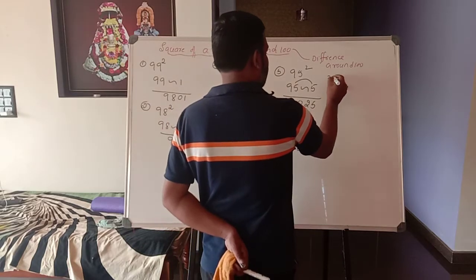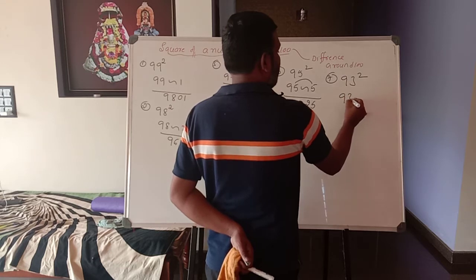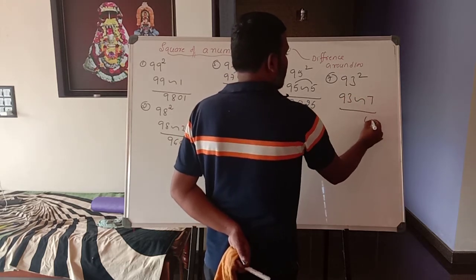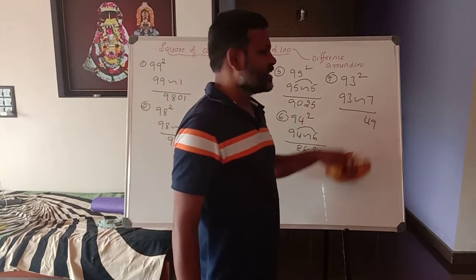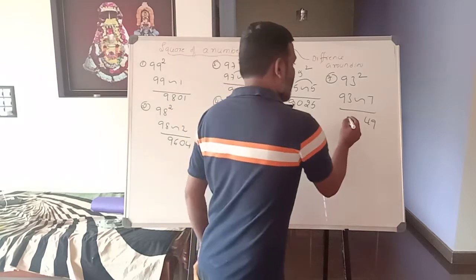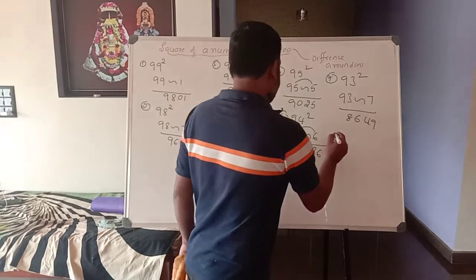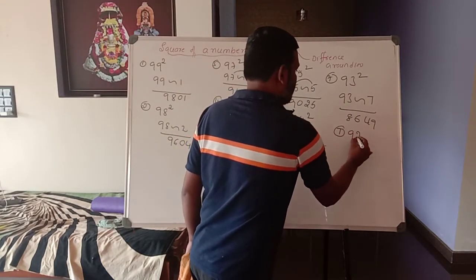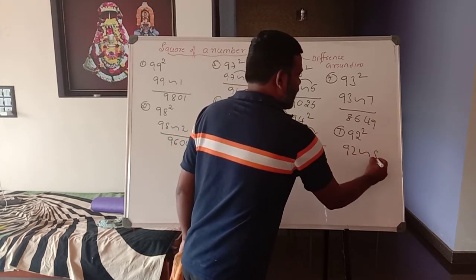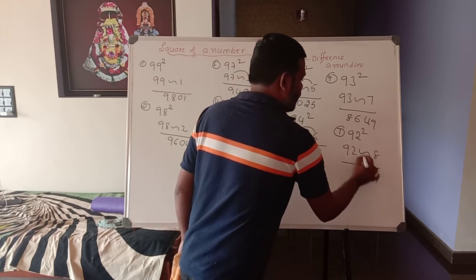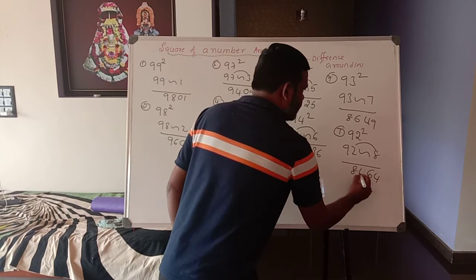Next, the seventh one is 93 squared. 93 with a difference of 7. 7 squared is 49. 93 minus 7 is 86. So the answer is 8649. Next, 92 squared — 92 with a difference of 8. 8 squared is 64. 92 minus 8 is 84. So the answer is 8464.